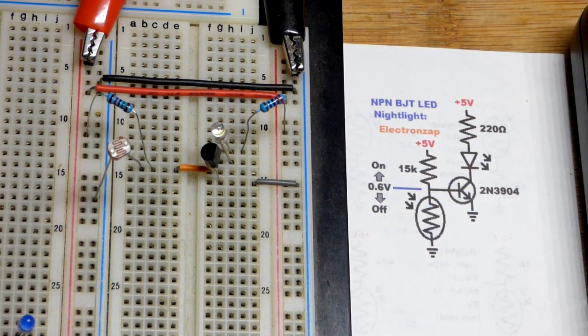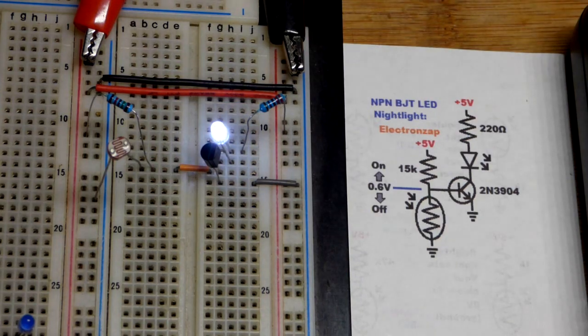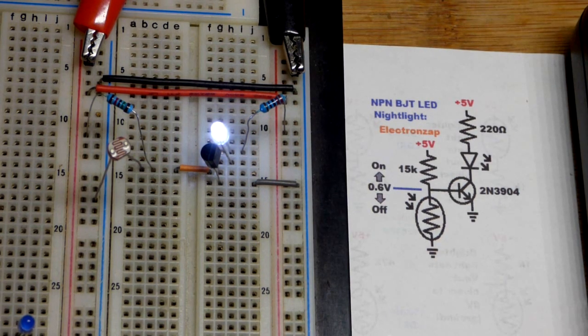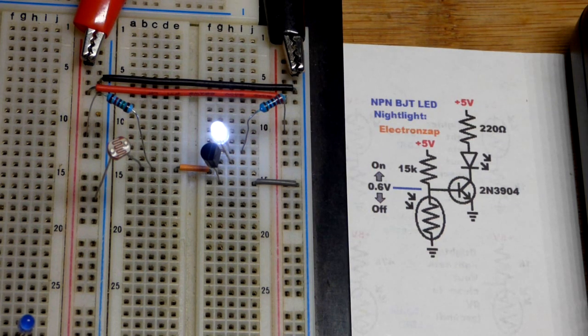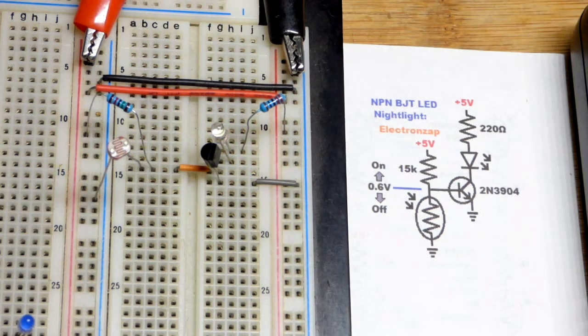And again, this is kind of a switch, but we do have the active region there. So if for some reason you want to get rid of the active region, you have to make a Schmidt trigger version of this with another transistor.